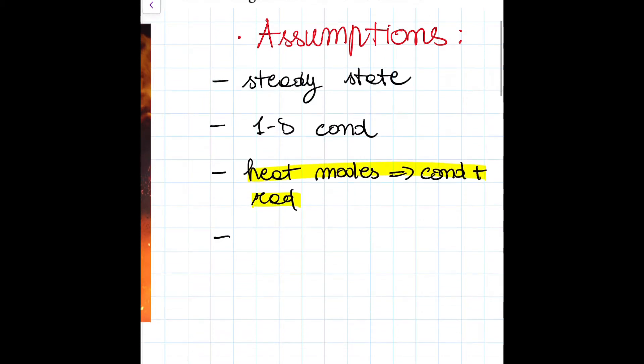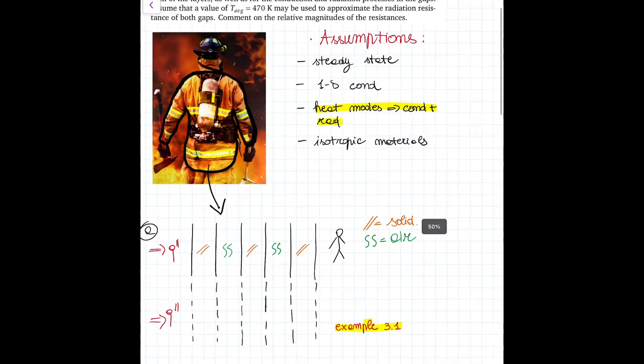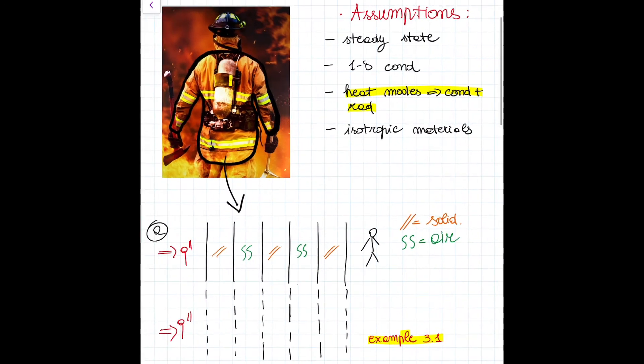Finally, the last assumption is that materials are isotropic, so their properties do not change depending on temperature. Having said that, we can now go on to the second important step, which is redrawing the scenario just to understand what we are dealing with better.